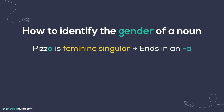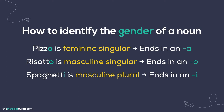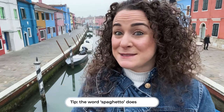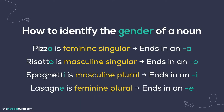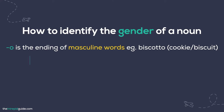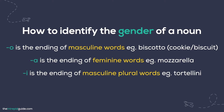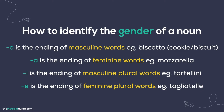Most Italian nouns end in a vowel; nouns ending in a consonant are of foreign origin. Let's look at some words we saw earlier: pizza is feminine — you can tell from the ending 'A.' The same applies to carbonara. Risotto is masculine — the ending 'O' usually signals masculine. Spaghetti is also masculine, but the letter 'I' marks the masculine plural form. The word 'spaghetto' doesn't exist — but I challenge you to have a dish with just one spaghetto! Lasagne is feminine plural, ending in 'E.' Summary: O = masculine singular (e.g., biscotto), A = feminine singular (e.g., mozzarella), I = masculine plural (e.g., tortellini), E = feminine plural (e.g., tagliatelle). There are some exceptions, but these rules apply to most cases.